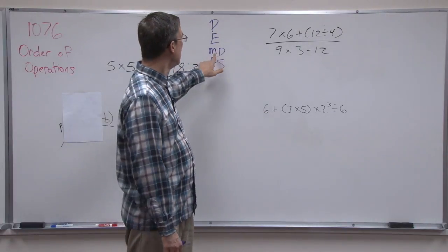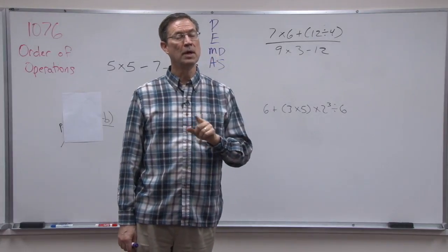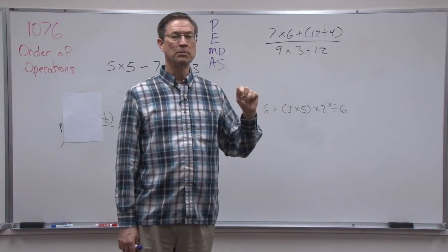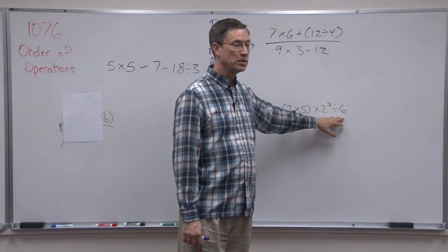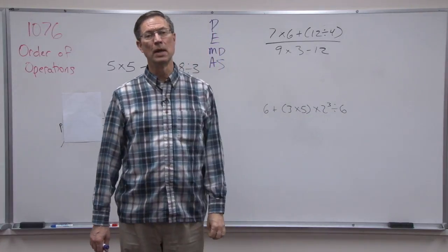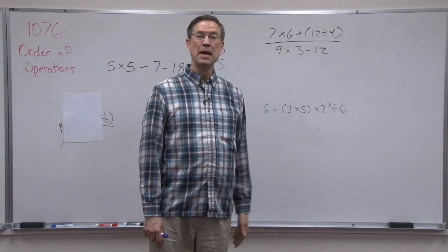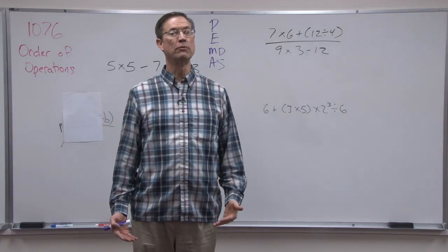Thirdly, we do all the multiplying and dividing. Now this is important. We go in order from left to right. Sometimes students see something that they like at the end that they think is easy to solve and they want to start here and work backwards, but we can't do that. We have to start at the left and work towards the right. And then the very last step is addition or subtraction, again, from left to right.